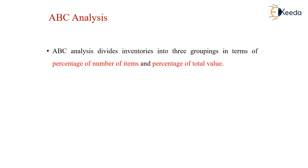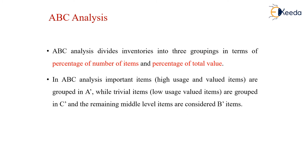What is ABC analysis? ABC analysis divides the inventories into three groupings in terms of percentage of number of items and percentage of total value. The important items, or items which are of high usage and value, are grouped in group A, while trivial items or low usage value items are grouped in C.